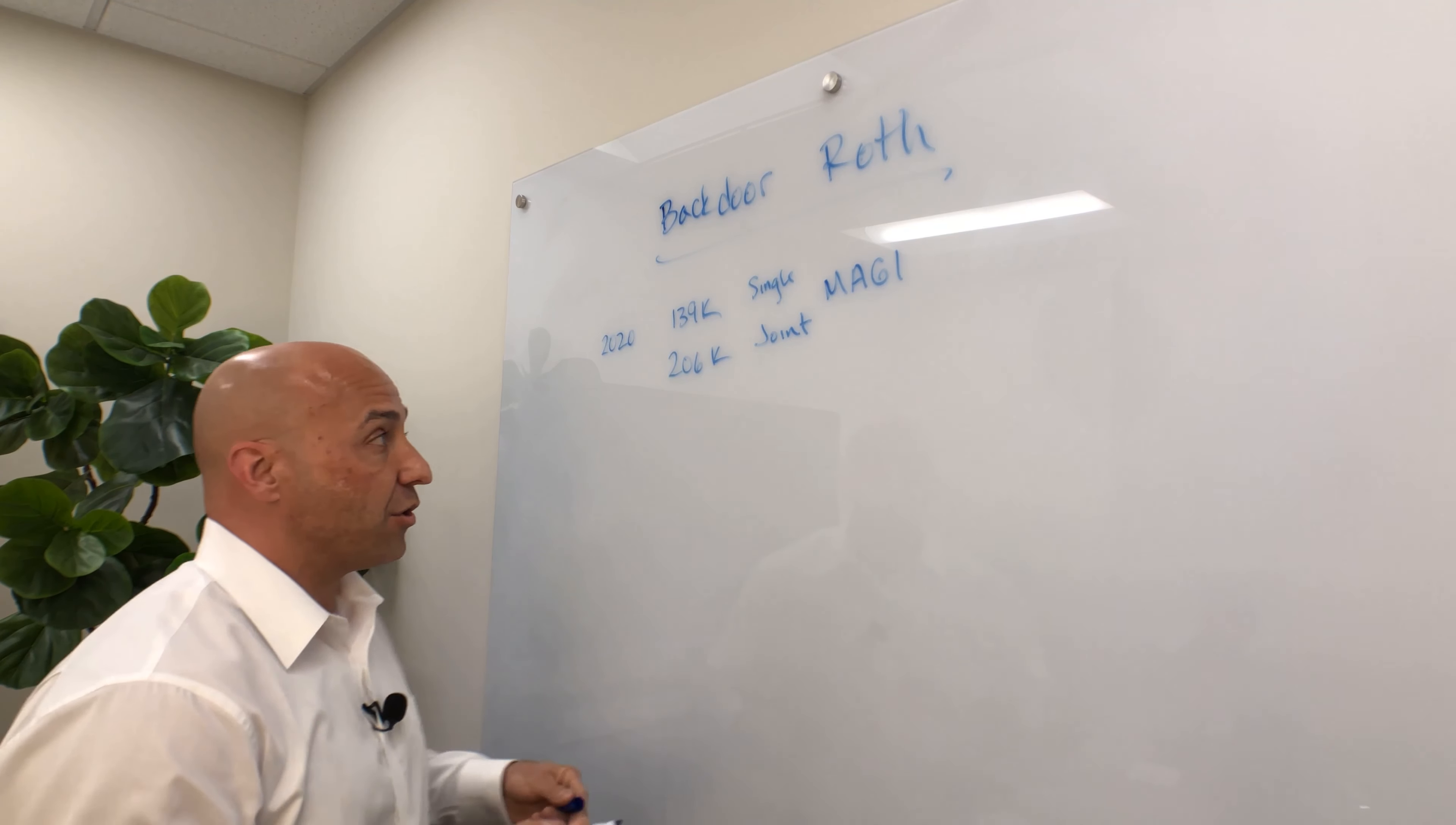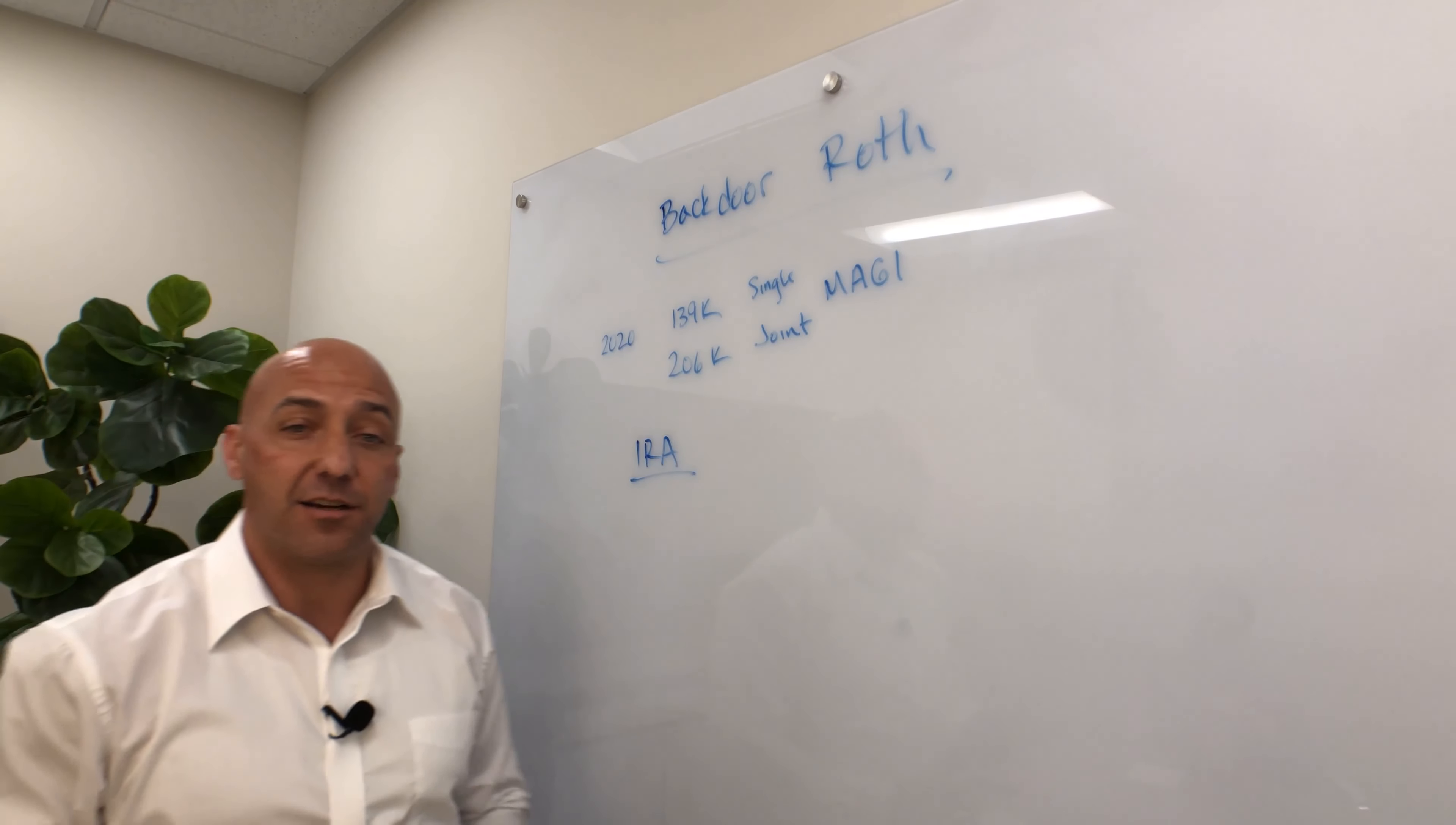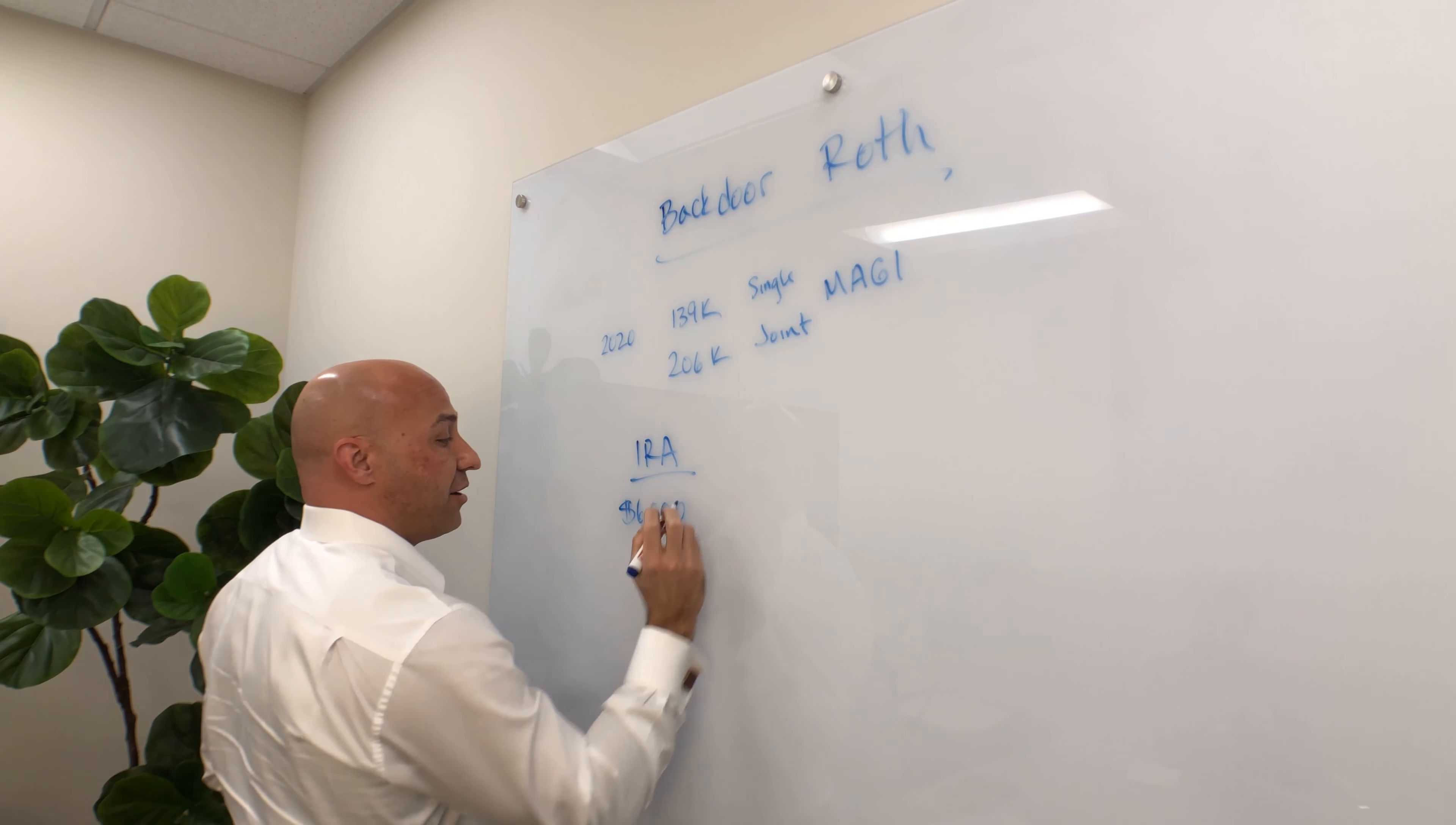A Roth conversion is when you take money from a traditional IRA and you convert it to a Roth IRA. So where this becomes important is that if you have a traditional IRA, the traditional IRA does not have these income limits. So you're allowed to contribute if you make this kind of money to a traditional IRA.